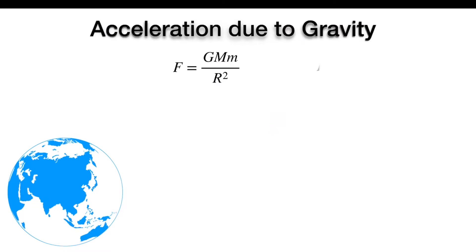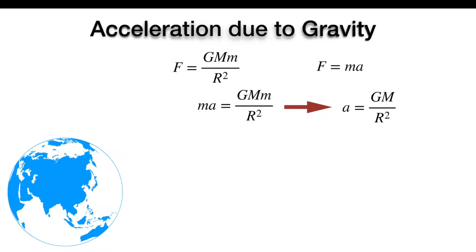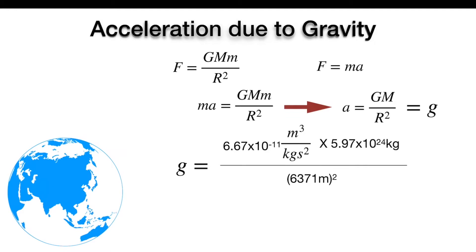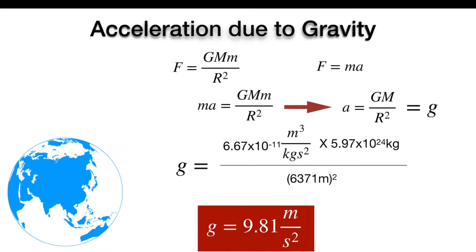From Newton's second law, F = ma, where m is the mass of an object and a is the acceleration. If we equate these two equations, we get the value of acceleration: a = GM/R². This acceleration is due to gravity and represented by g. Putting in the values of these parameters gives g equal to 9.81 meters per second squared.